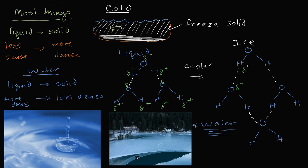This is what keeps icebergs floating. This is what keeps lakes like this from freezing solid. The surface freezes, but you have water below, and in fact that ice on top protects the water below from getting even further frozen. So you have animals able to just hang out down there, go through the winter, and then everything will thaw once you get to the spring and the summer.